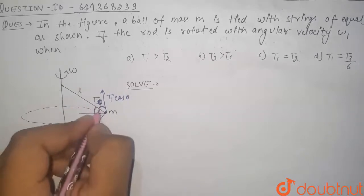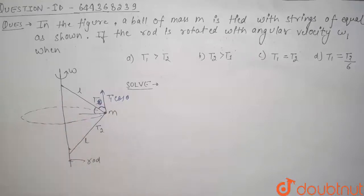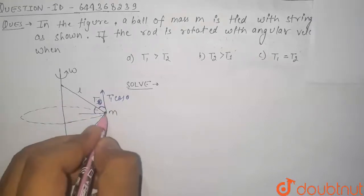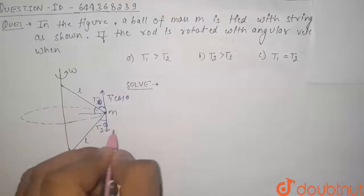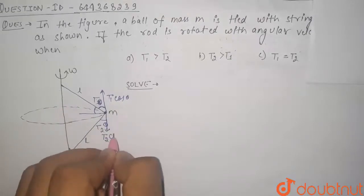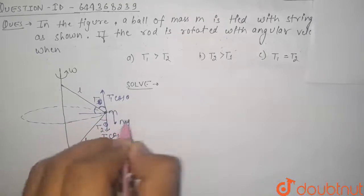So these are T1 and T2 tensions. Now let us assume that this angle is theta, so the component of this T1 along upside will be T1 cos theta, and similarly this angle will also be theta because this length is also equal. So the component of T2 along downside will be T2 cos theta.